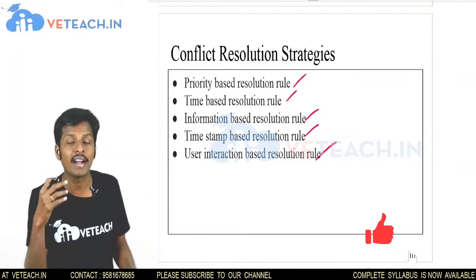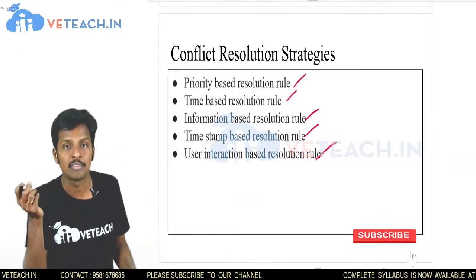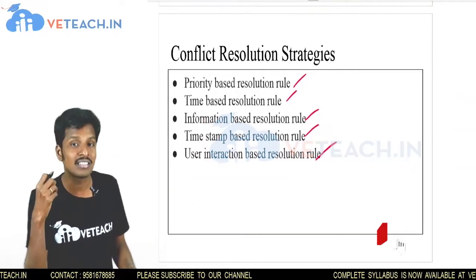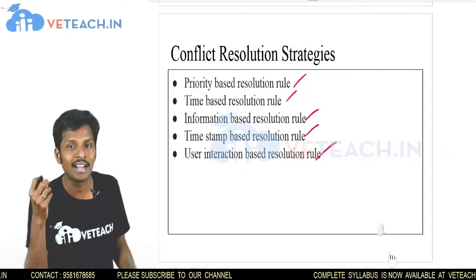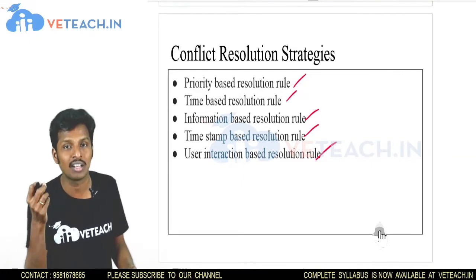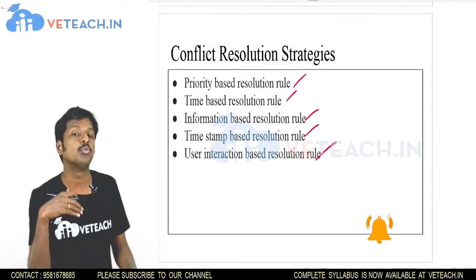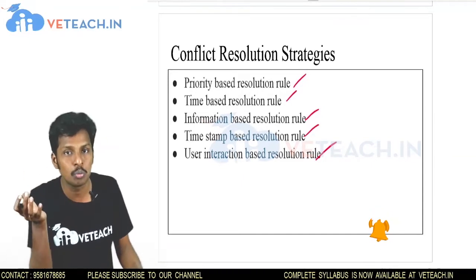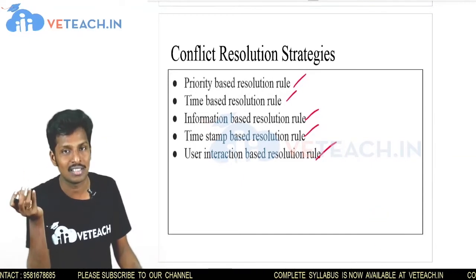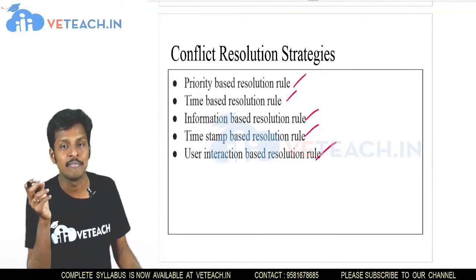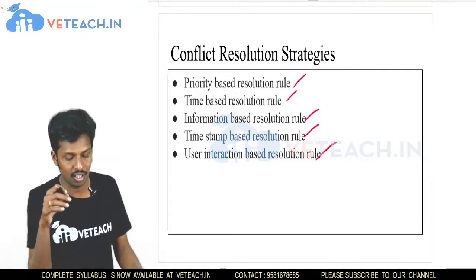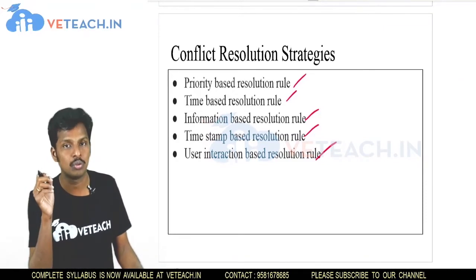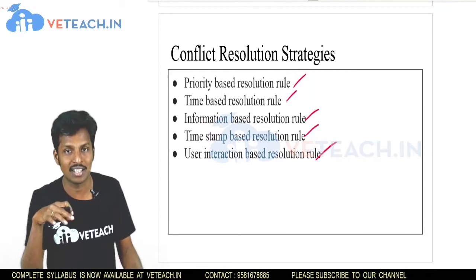In user interaction-based resolution, we interact with the user and ask them which data has to be synchronized. By using any of these resolution strategies, we can resolve conflicts that occur during synchronization.